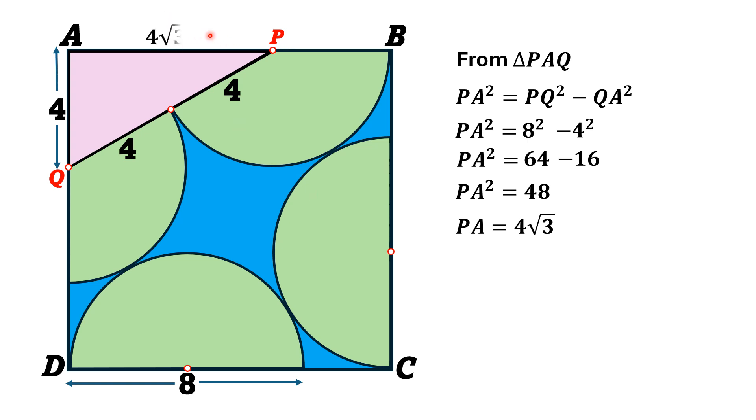So, this length, this particular length is 4 square root of 3 and this is the radius of semicircle which is equal to 4 units.